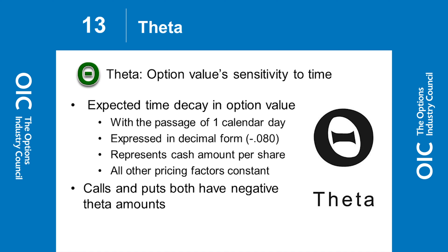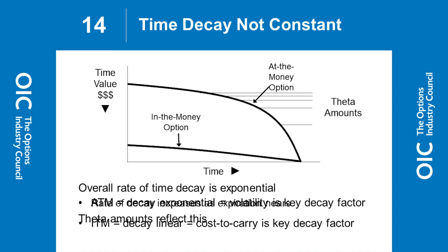Theta, as I talked about, is basically the sensitivity to time – what the value of the option is over time. The more time premium in an option, the greater the theta. Buyers will have to pay more; sellers collect more. The more the stock moves, the higher the premiums. One thing we know about theta is that it is not linear. As we get close to expiration, those premiums start to collapse very quickly. That gets into the question of what strategies work for you – are you an option buyer or an option seller?